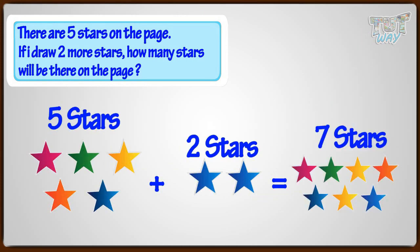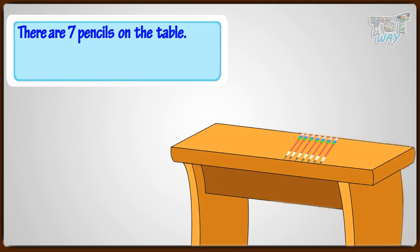So there are seven stars in total. Let's take another example. There are seven pencils on the table. If I put three more pencils, how many pencils will be there in total?